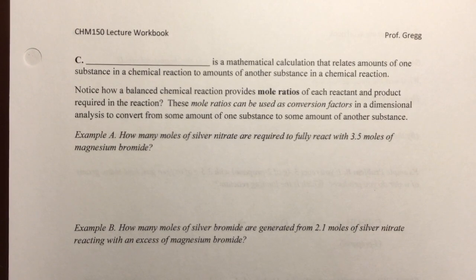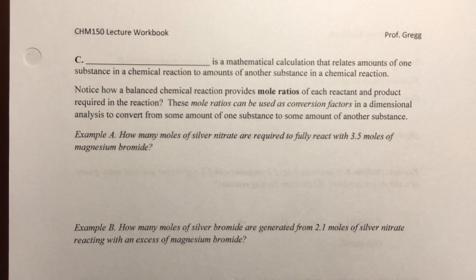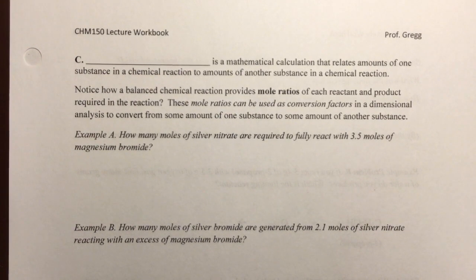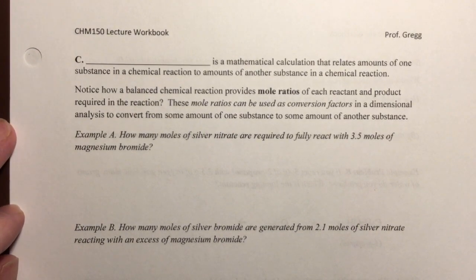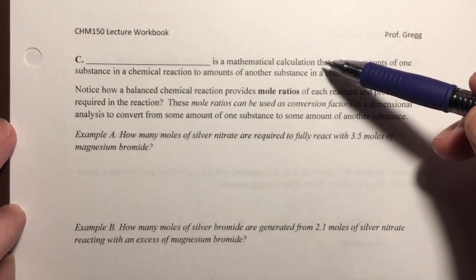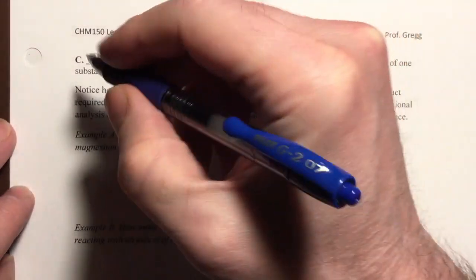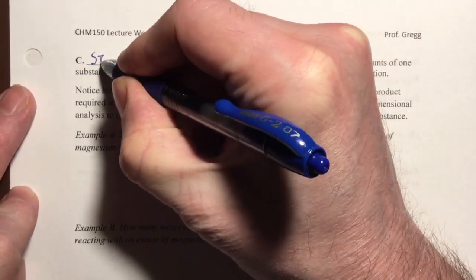Now that we have covered how to complete and balance a chemical reaction, we are going to use a completed and balanced chemical reaction to do some mathematical calculations. These calculations relate an amount of one substance in a chemical reaction to another substance in a chemical reaction, and those kinds of calculations have a fancy word: stoichiometry.